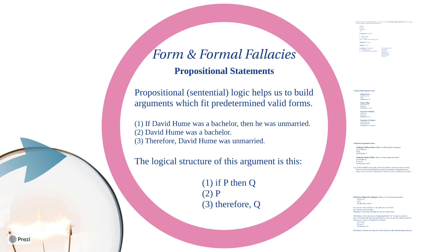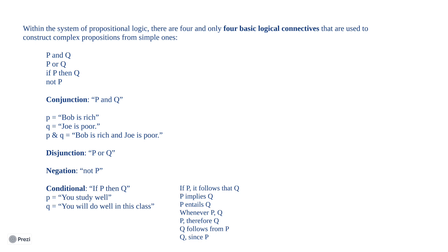All good arguments have at least two premises that lead to a conclusion, and if the argument is formulated well, the first premise when coupled with the second should logically force us to the conclusion. For example, premise one: if David Hume was a bachelor, then he was unmarried. Premise two: David Hume was a bachelor. If premise two is true and premise one is the case, then we necessarily have to conclude David Hume was unmarried. The logical form looks like this: if P then Q; P, therefore Q.